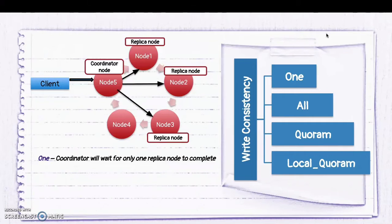As soon as the coordinator receives a success acknowledgement from any one node — say node 3 confirms it completed the write — it sends the success acknowledgement back to the client without waiting for nodes 1 or 2 to complete. That was consistency Level 1.